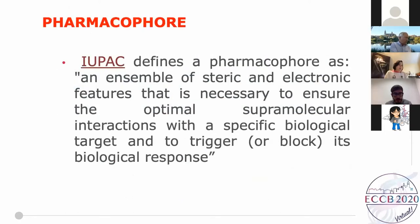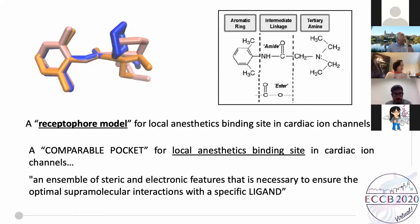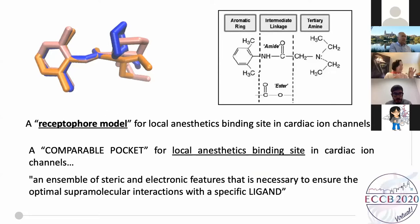We are going further and trying to understand what is called receptor-forme models. If a drug binds to three different kinds of ion channels, we may also have a comparable binding pocket in those three channels — an ensemble of steric and electronic interactions necessary to ensure the drug's interaction with all three. To study this concept, we are using the local anesthetic binding site. Local anesthetics share an aromatic ring and intermediate linkage, and we are studying lidocaine, bupivacaine, and ropivacaine.